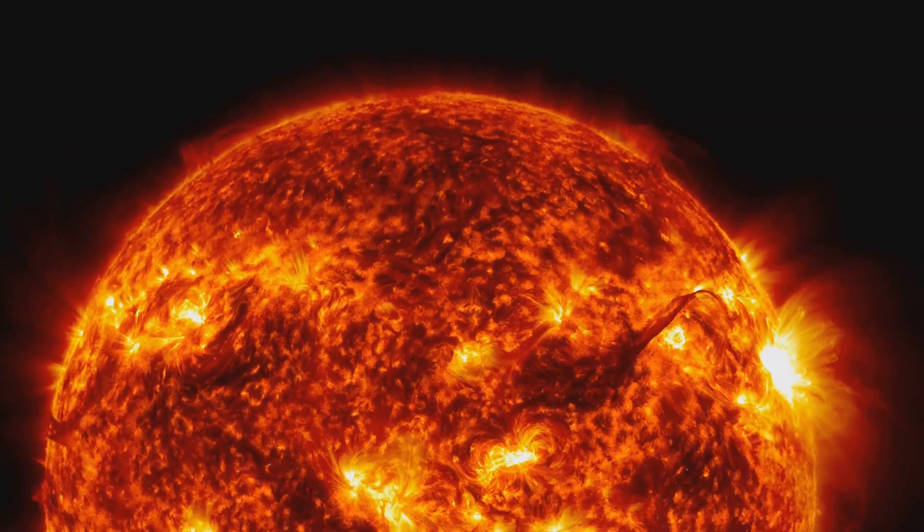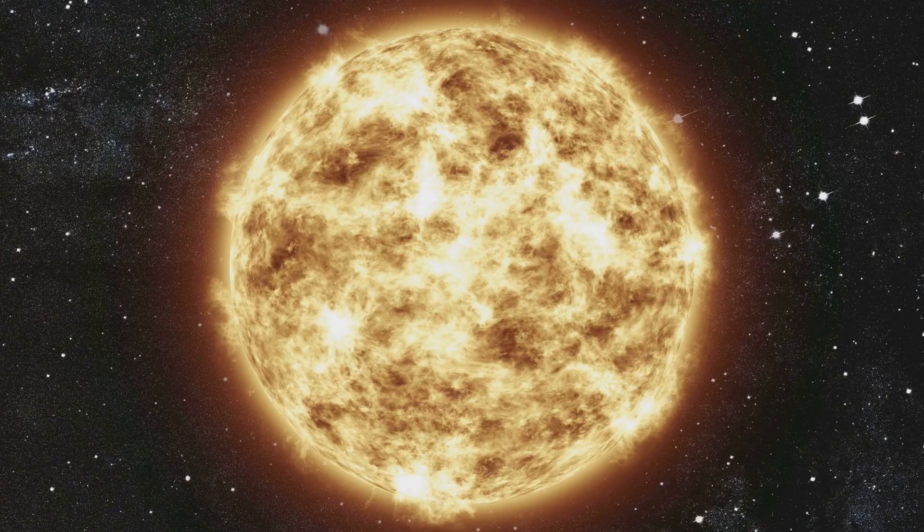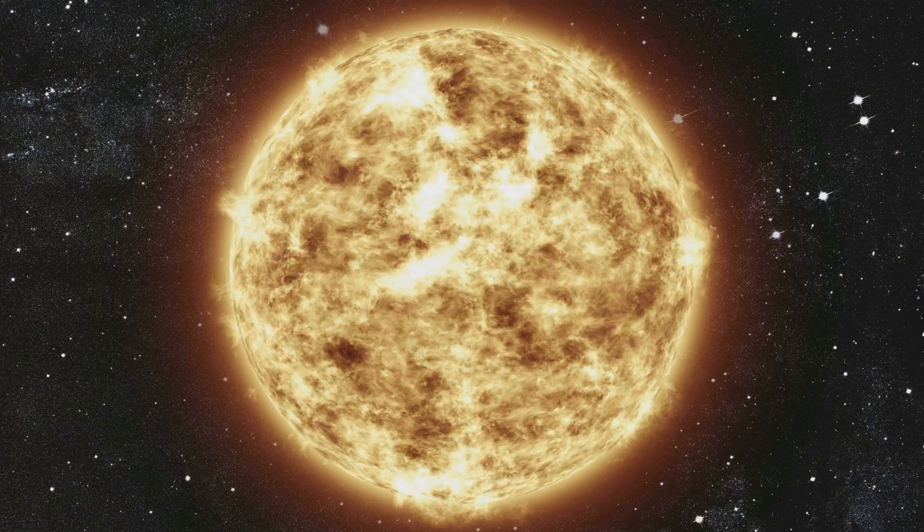So, at number two, can you believe our Sun is actually losing one billion kilos per second? It might be difficult to comprehend, but it's part of the Sun's natural cycle. While it may sound alarming, the Sun, just like other stars, sheds mass through a process called nuclear fusion.